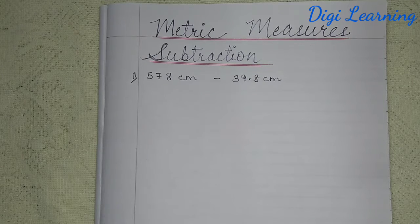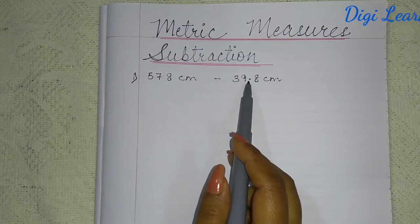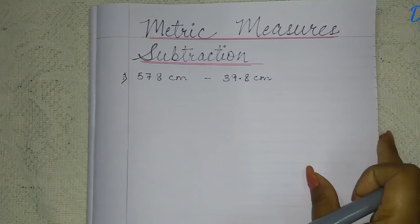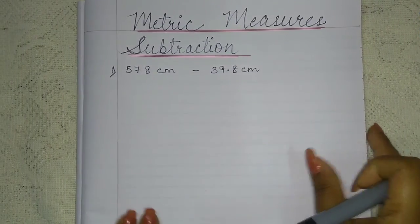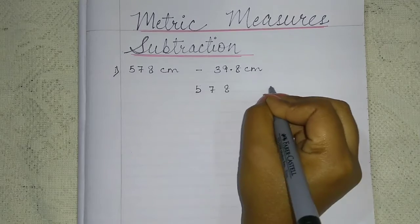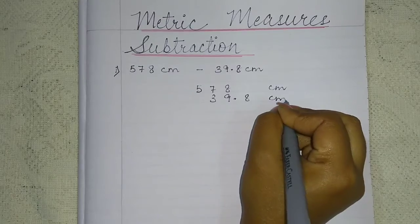So here first of all see our first question which is of the same unit. Same unit means 578 cm minus 39.8 cm. So we can subtract it easily. We can subtract it very easily. Do it: 578 cm minus 39.8 cm.